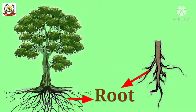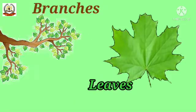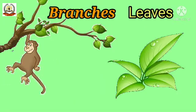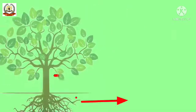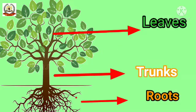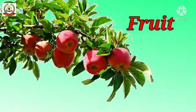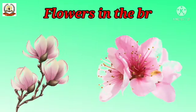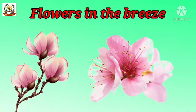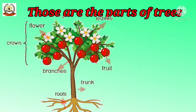Roots, trunks, branches leaves, branches leaves. Roots, trunks, branches leaves, branches leaves. Birds and fruits and flowers in the breeze. Those are the parts of trees.